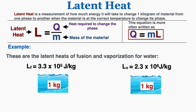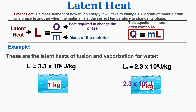The latent heat of vaporization tells me that if I want to convert 1 kilogram of water into steam and the water is at its vaporization point, I need to add exactly 2.3 times 10 to the sixth joules to completely convert the water into steam.